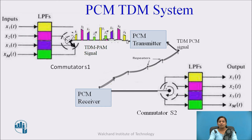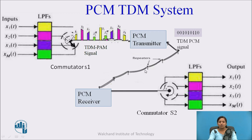The TDM-PAM signal is given to the PCM transmitter, which converts it into a code — the PCM signal. This code is then transmitted over the communication channel. In between, repeaters are used, which act as regenerators: they regenerate and amplify the signals and remove distortion present along the channel.